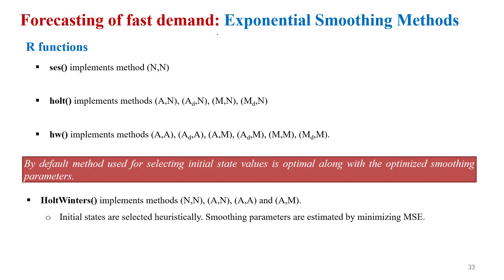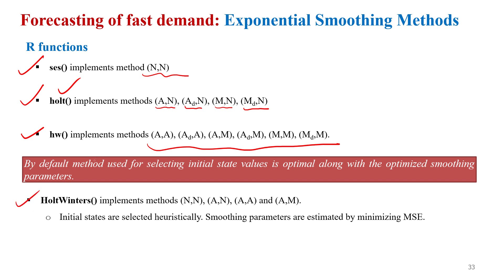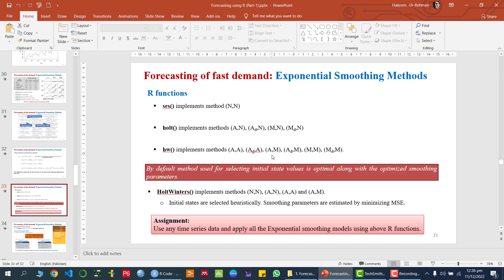Now let's talk about how to implement these methods in R. We have multiple functions available: SES, which applies simple exponential smoothing only; the holt() function, which handles A and N models — additive trend, damped trend, or multiplicative trend with no seasonality; and the HoltWinters() function for seasonal models. Let's see how to apply these methods in R.